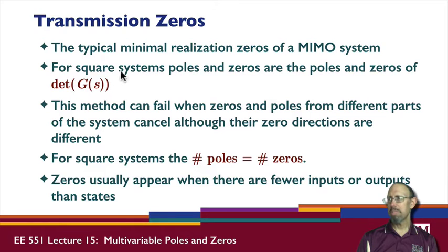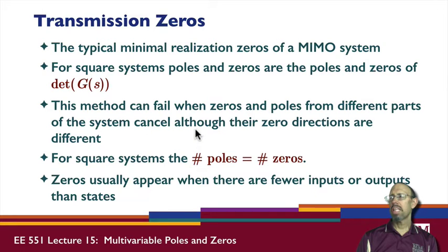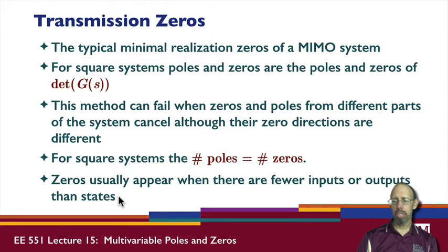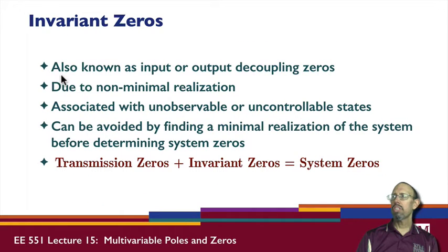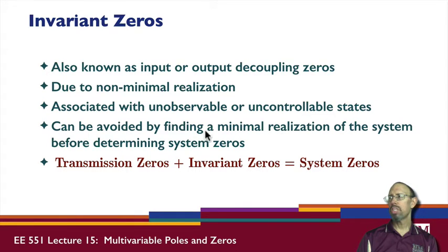This statement is correct. But the method can fail when zeros and poles are from different parts of the system and cancel because of their directions — we saw an example of that earlier. In general, for square systems, the number of poles equals the number of zeros. Zeros usually appear when there are fewer inputs or outputs than states. Invariant zeros, also known as input or output decoupling zeros, are often due to a non-minimal realization of the system. They can be associated with unobservable or uncontrollable states, and can be avoided by finding a minimal realization. In general: transmission zeros plus invariant zeros equals system zeros.